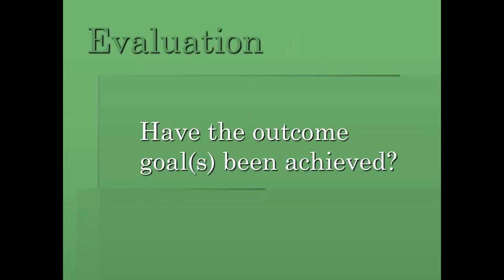Then we move to our evaluation phase. This is where we look and say: have the outcome goals been achieved? If I identified a certain outcome based on a certain problem, have those outcome goals been met? This is the last phase, but it actually loops us right back around to the beginning, which is why we continue to have this ongoing process.